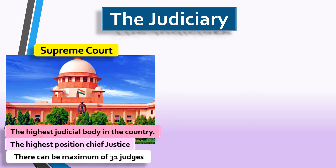So the highest judicial body in the country is the Supreme Court. The highest position in the Supreme Court is that of the Chief Justice. There can be a maximum of 31 judges in the Supreme Court, and they are appointed by the President.